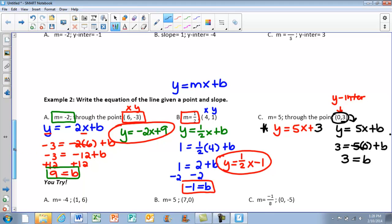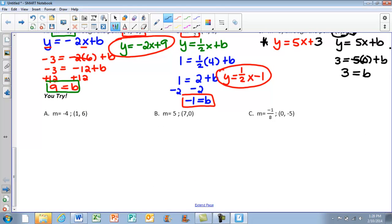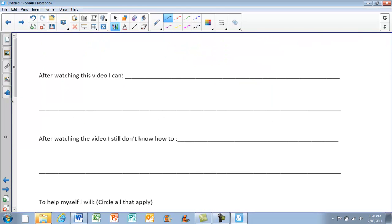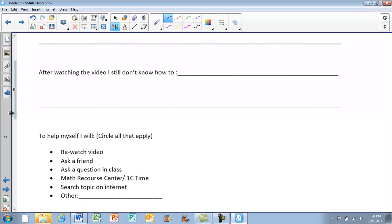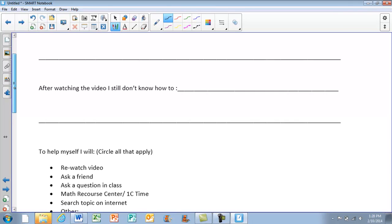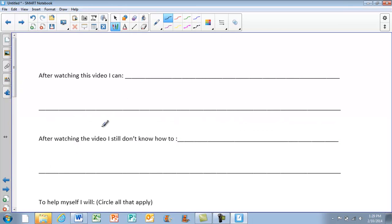Again, we're going to save the U-tries for class tomorrow. You need to make sure that you flip over the back side of your page and answer these questions in order to get credit for your note sheet. This should be an easy one for you guys to get credit for since there's only 6 examples to look at. We'll see you in class tomorrow.